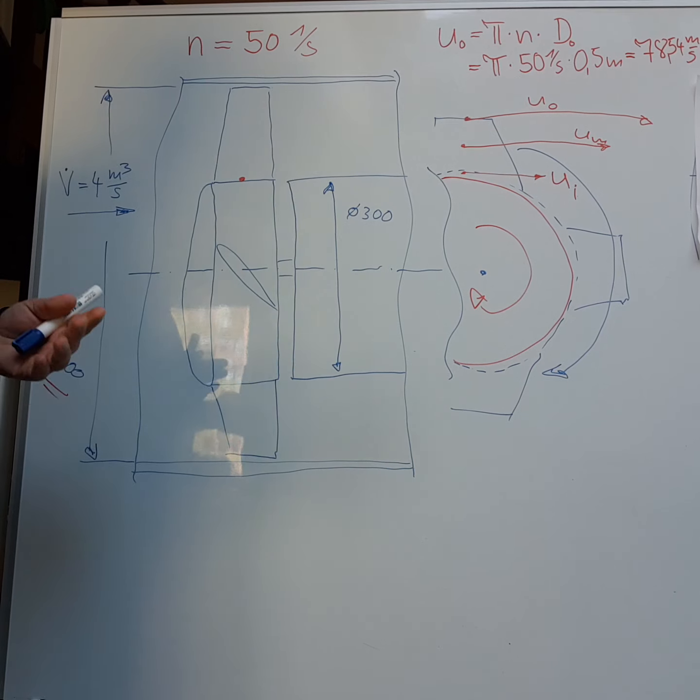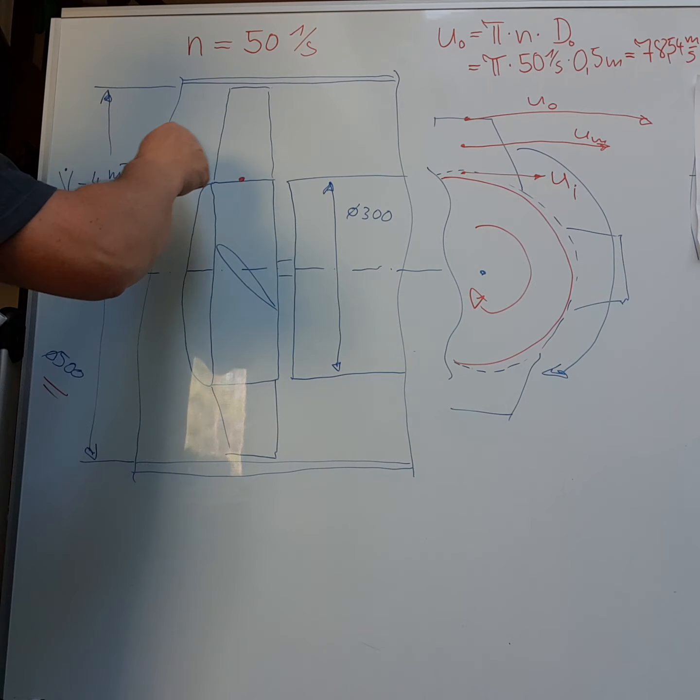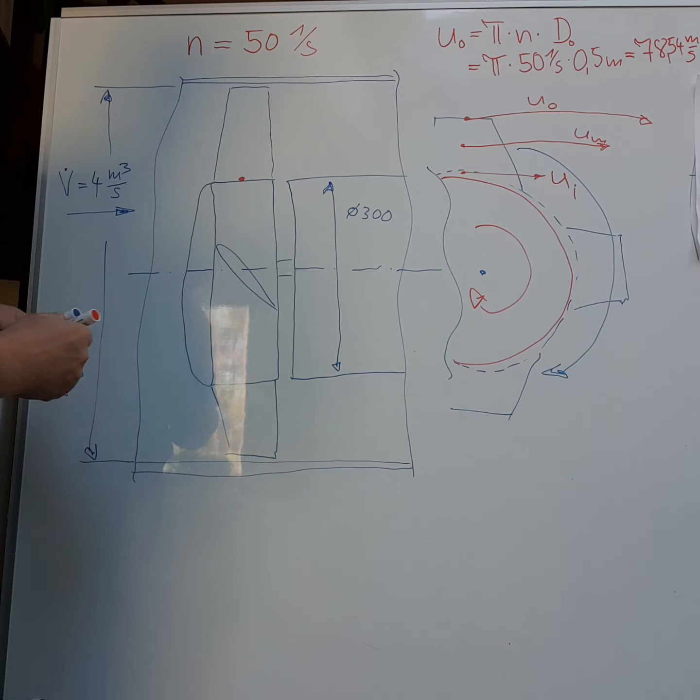But we don't have the velocity of the air. Now how can we calculate the velocity here in this direction, the air velocity?